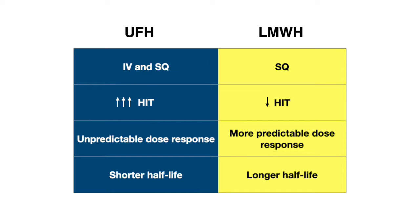Besides the different factors they inhibit, there are other differences between unfractionated heparin and low molecular weight heparin. Unfractionated heparin can be given in two forms: IV as well as subcutaneous injection. In comparison, low molecular weight heparin is only given in a sub-Q form. Unfractionated heparin has a much higher risk of HIT, or heparin-induced thrombocytopenia. It also has an unpredictable dose response and requires frequent monitoring, whereas low molecular weight heparin has a more predictable dose response and we can often rely on weight-based dosing.